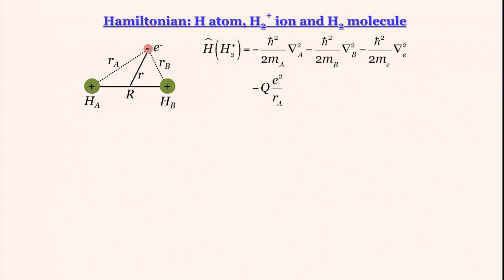There is going to be a nucleus-nucleus repulsion. That is where this capital R, inter-nucleus separation, becomes extremely useful. These are the terms: kinetic energy term for nucleus B, electrostatic attraction of the electron by nucleus B, and nucleus-nucleus repulsion. Already we have six terms.